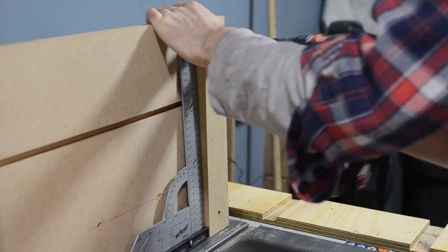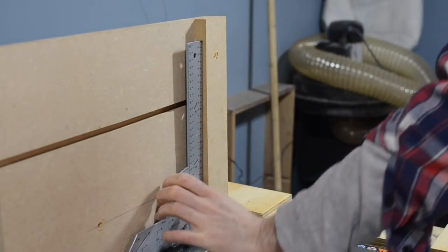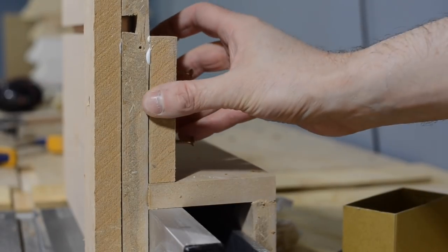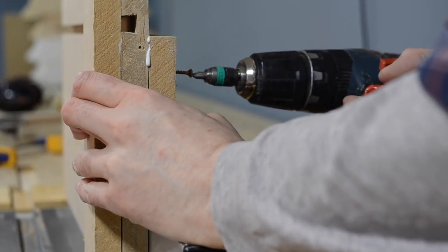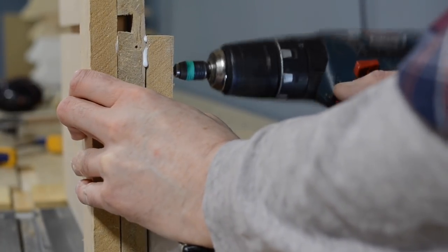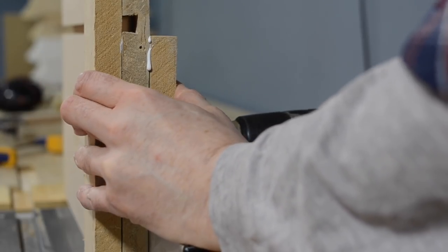One last thing is find another small scrap and add it here. Now, not the nicest looking bit, but it's just going to give me something to hold onto while I push it through the table saw. It's going to keep my hand behind the fence and away from the blade.